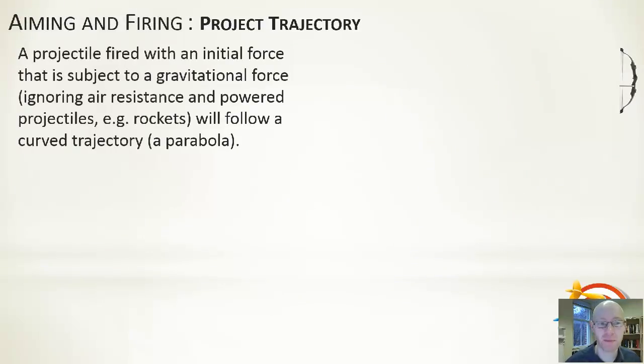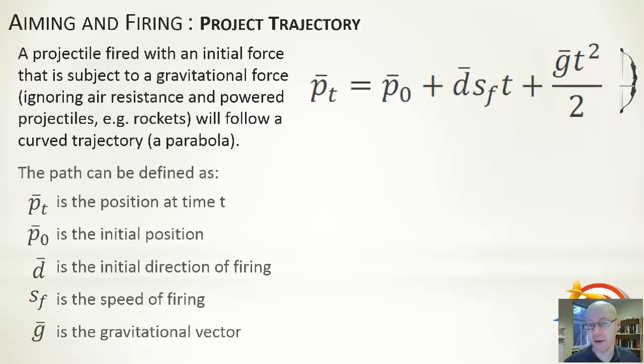The equation is shown here. This probably looks more scary than it really is. We'll break this down. It simply breaks down into three different parts. Pt is the position of the projectile at time t. If t equals zero, this is the starting position where we fire it from. If t equals one, that's the position after one second. If t equals two, that's the position after two seconds. It describes for a given point in time where we'll find that projectile. It's comprised of the initial position, P0 is where we actually launch the projectile from.